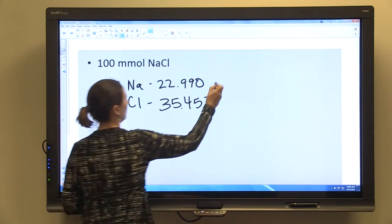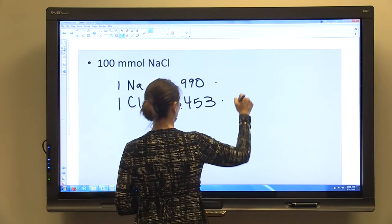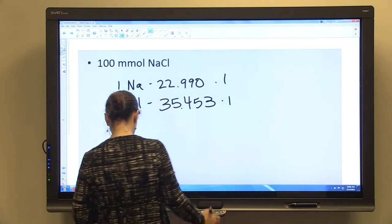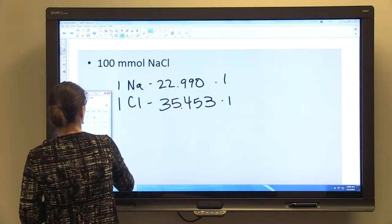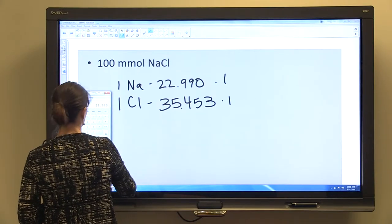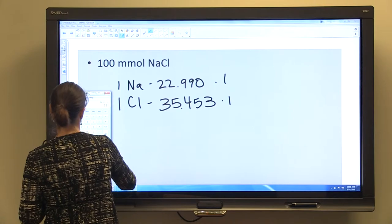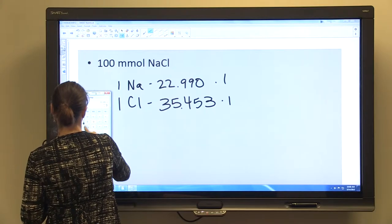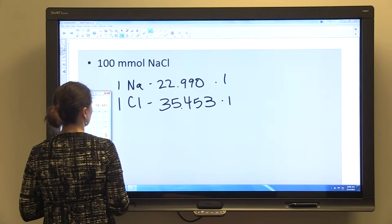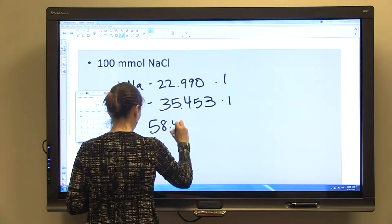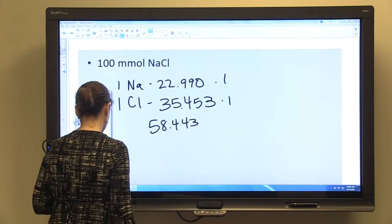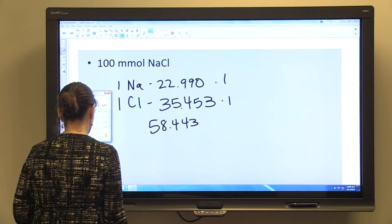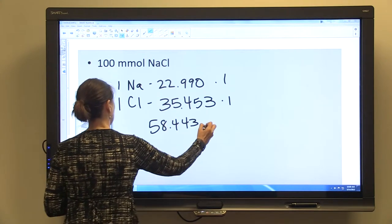Multiply both by one because there's one of each in each molecule. We can add those together because multiplying by one isn't going to change them. So 22.990 plus 35.453 is 58.443 grams per mole.